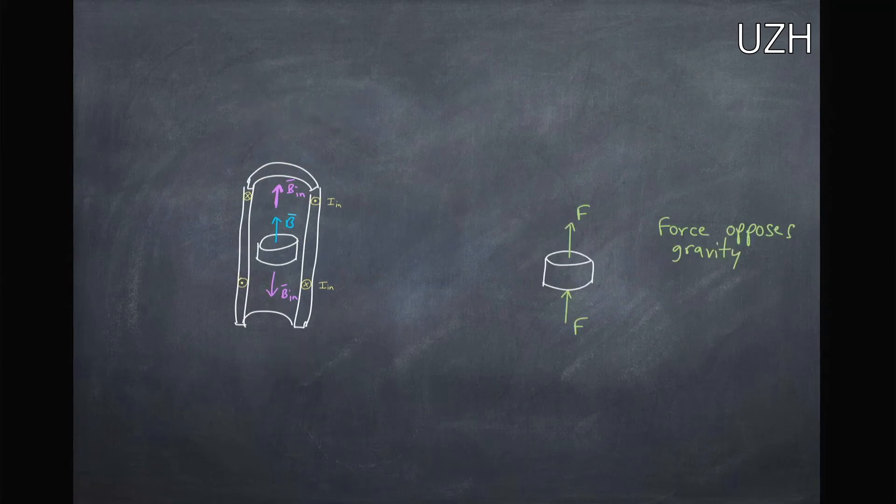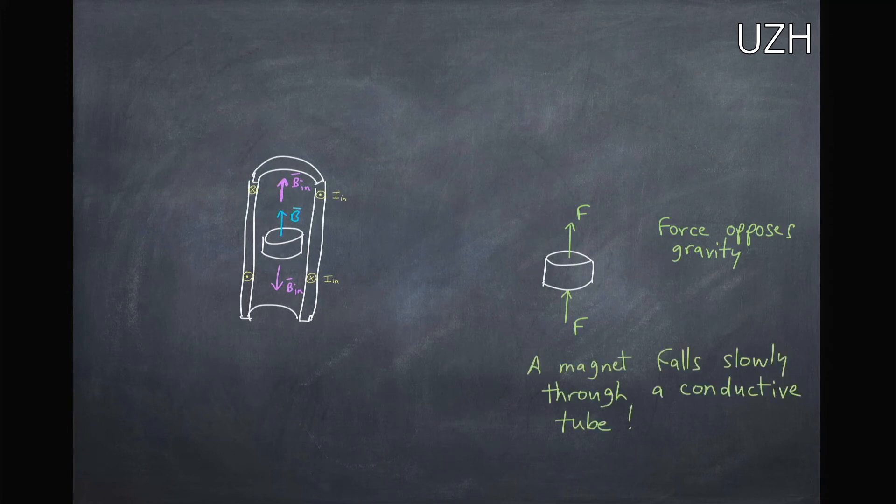So when we look at this, we see that we have forces both on the top and on the bottom of this magnet that are opposing gravity. Therefore, we would expect that the magnet will fall slower through our conductive tube based on this force that's opposing gravity.